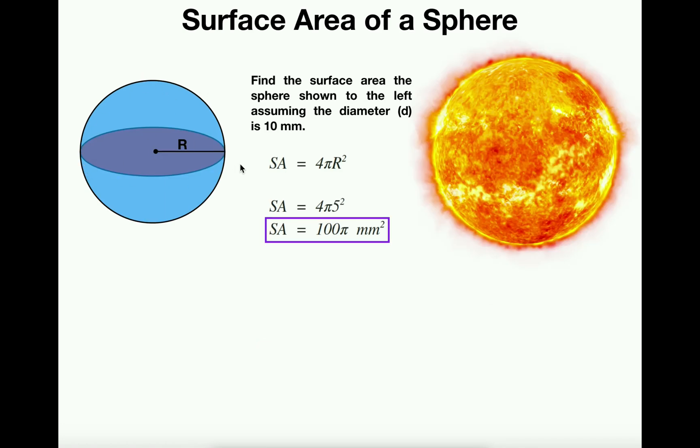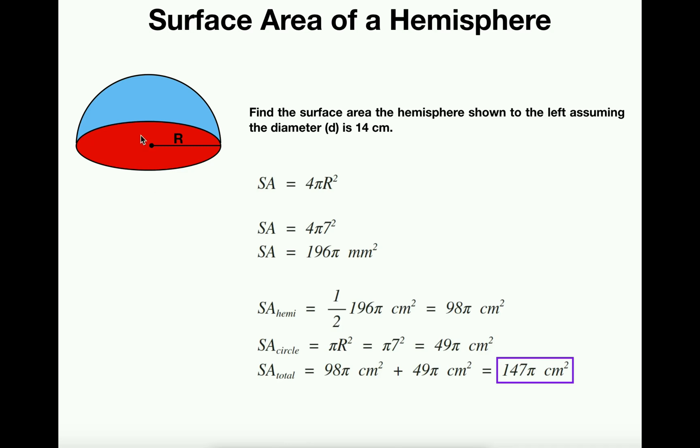But since we're cutting off the bottom of the sphere, we now have a bottom face, which is a circle. And so our surface area calculation becomes a little bit more complicated. So now let's calculate the surface area of the hemisphere shown to the left, assuming the diameter is now 14 centimeters.